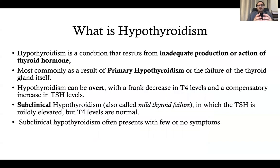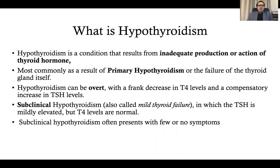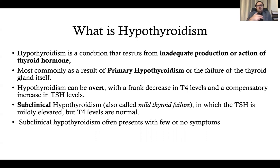Hypothyroidism is a condition that results from inadequate production or action of thyroid hormone. Most commonly it results from thyroid failure. We mostly see primary hypothyroidism, which is due to thyroid gland issues itself. It is less common to see secondary hypothyroidism due to the hypothalamus or pituitary, called central hypothyroidism. Hypothyroidism may also be classified as overt, with frank decrease in T4 and compensatory increase in TSH, or subclinical, with mild thyroid failure and mildly elevated TSH around 4, 5, 6, or 7 with T4 in the normal range.